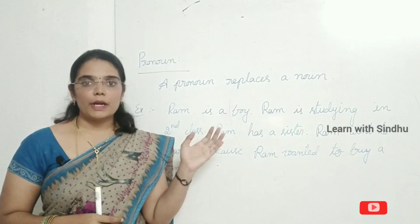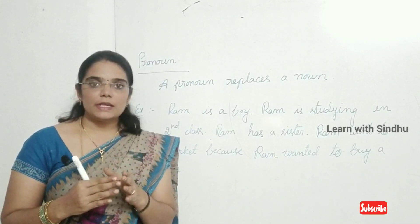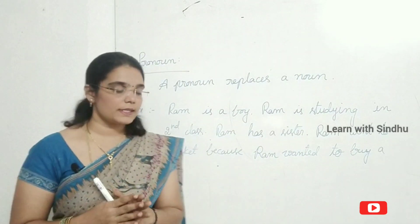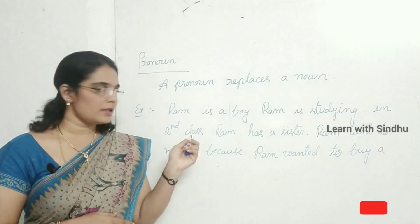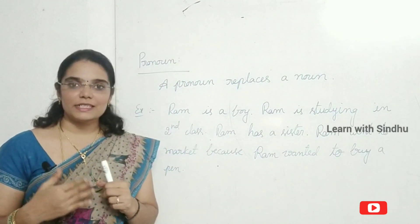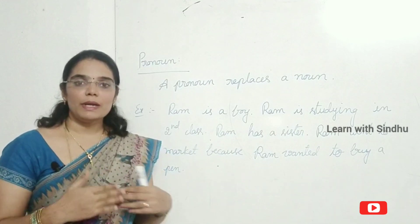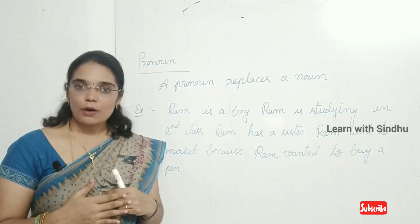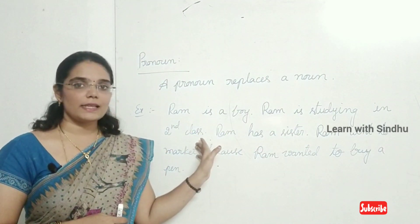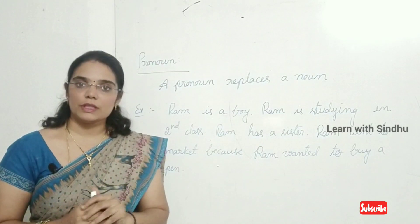Now we will see pronoun. A pronoun replaces the noun — it takes the place of a noun. Why do we use a pronoun instead of a noun? Consider: Ram is a boy. Ram is studying in second class. Ram has a sister. Ram went to market because Ram wanted to buy a pen. Repeatedly saying 'Ram' sounds weird and unnatural. So instead of repeating the noun, we replace it with a pronoun: He is studying in second class. He has a sister. He went to market because he wanted to buy a pen.